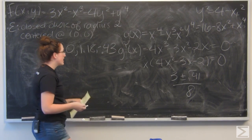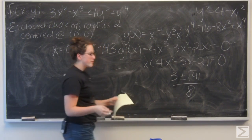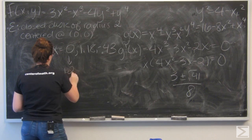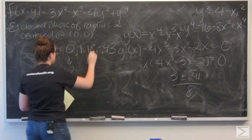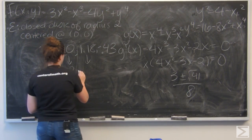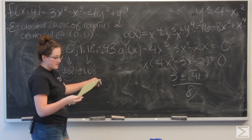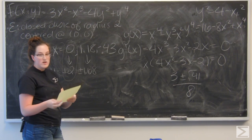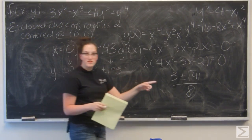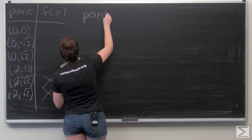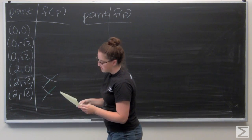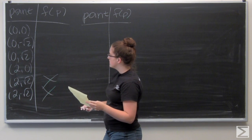Now I find the y values associated with each x by plugging into y squared = 4 minus x squared and taking the square root. For x equals 0: y squared equals 4, so y equals plus or minus 2. For x equals 1.18: y equals plus or minus 1.68. For x equals negative 0.43: y equals plus or minus 1.95.